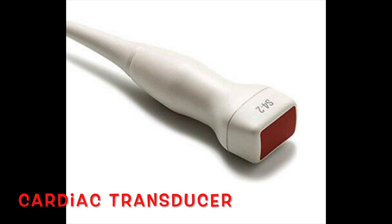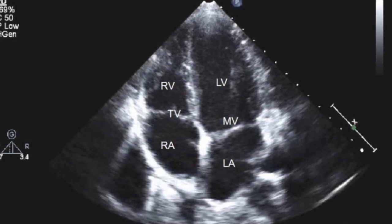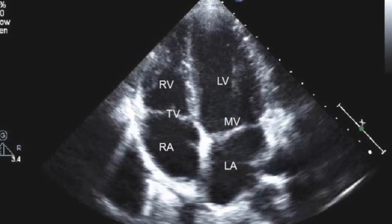Let's get into some tools we use as ultrasound techs. This is a cardiac transducer. Transducers convert pressure or brightness into electrical signal, or vice versa, because the signal has to go to the body and the body's signal has to come back to create an image. This cardiac transducer is used for echocardiograms — it's the smallest of them all, which is nice because it's lightweight and easier on the wrist.